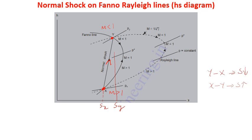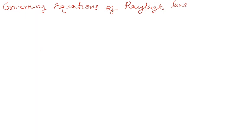The other topic is normal shock on the Fanoline. This is the normal shock. The Mach number relationship applies. Now, the governing equations of Rayleigh line.